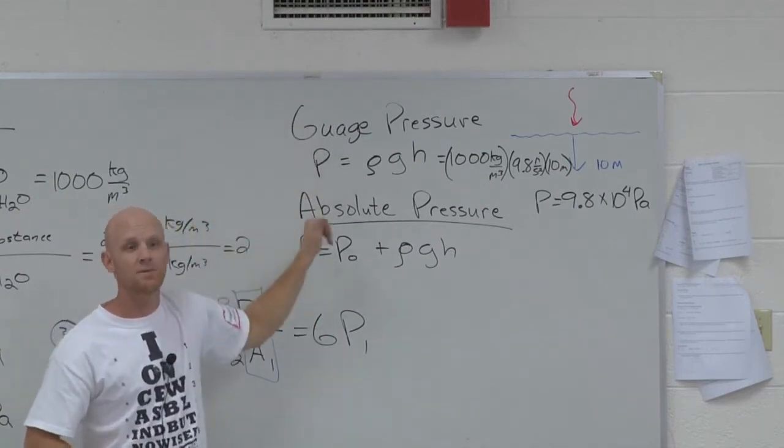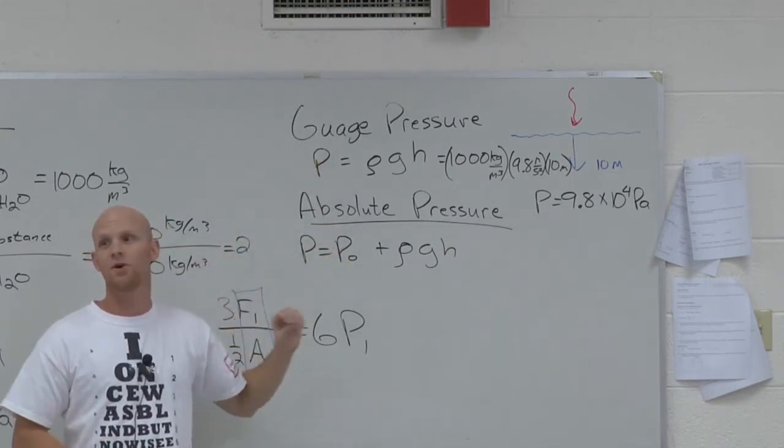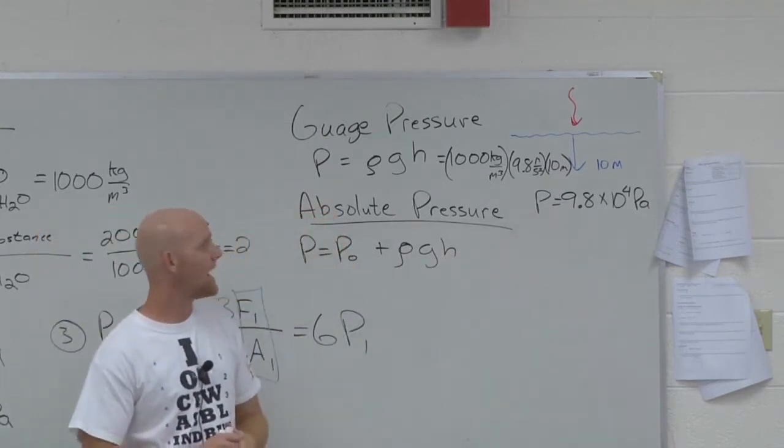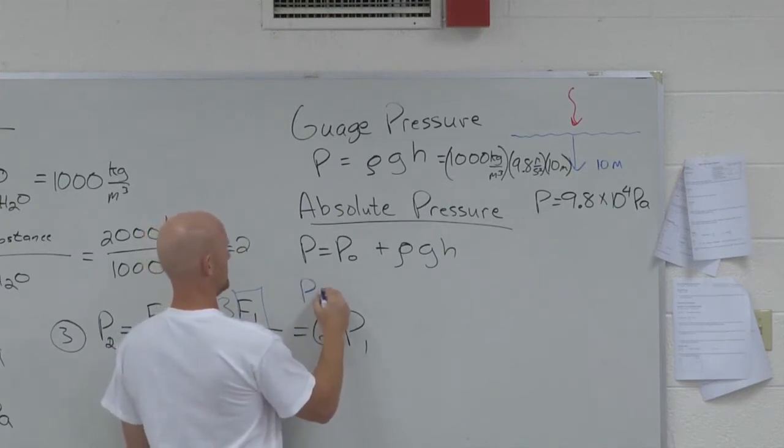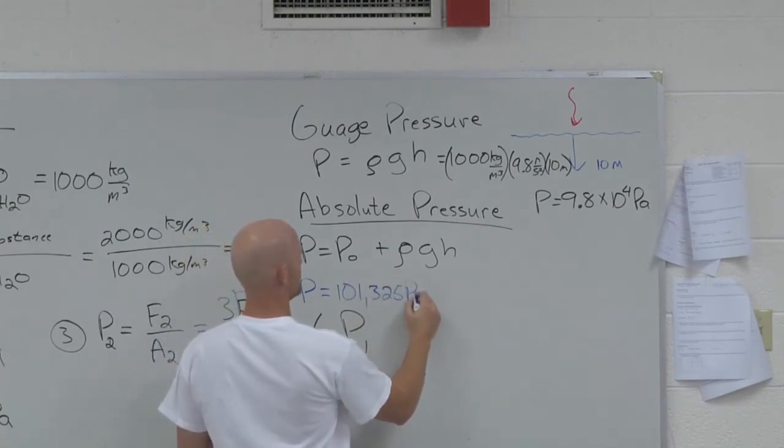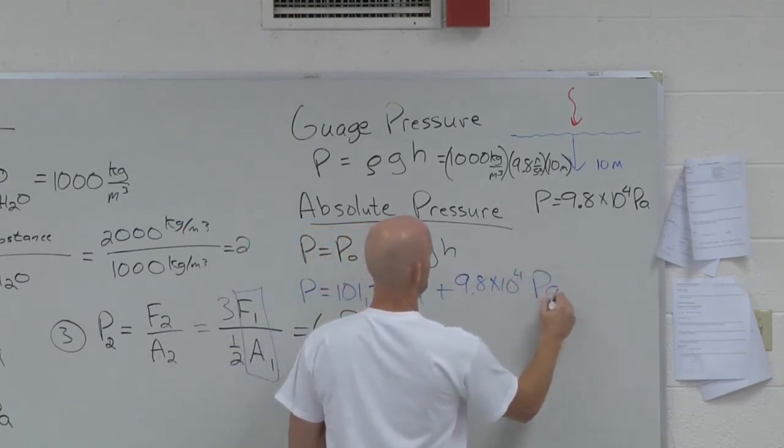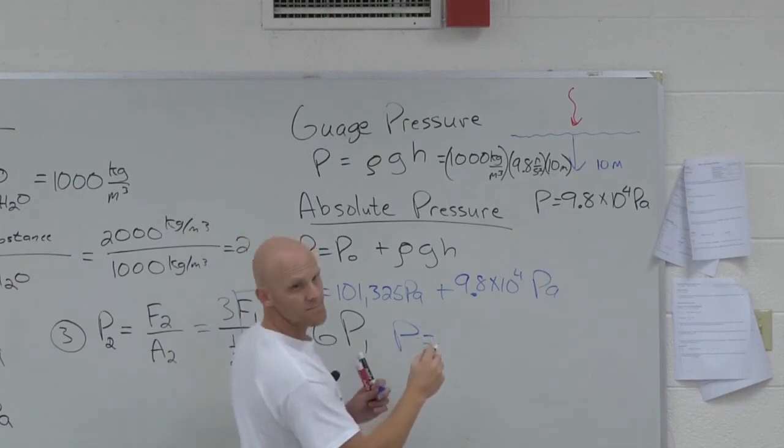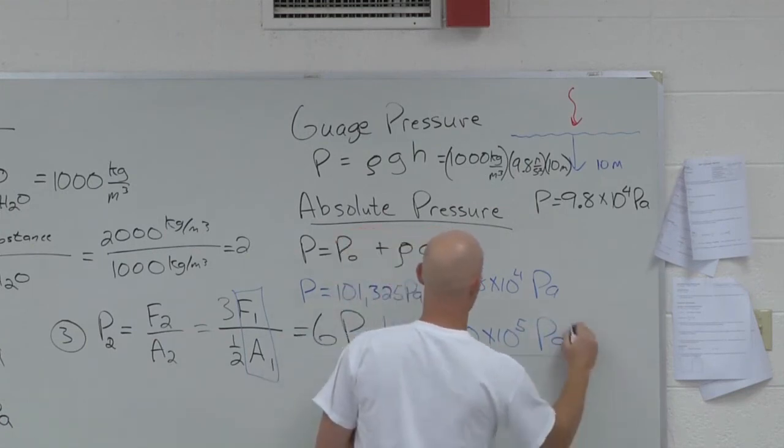Just your difference between gauge pressure and absolute pressure, be careful. Look very carefully. Are they asking for the gauge pressure or the absolute pressure? Don't get the two confused. Remember, you got to add in the atmosphere. So if in this previous example, I'd wanted the absolute pressure, what would the absolute pressure be? Assuming we're beginning at sea level. Well, we'll start with atmospheric pressure, 101,325 Pascal, plus our gauge pressure of 9.8 times 10 to the fourth Pascal. And so what does our absolute pressure come out to? 2.0 times 10 to the fifth Pascal.